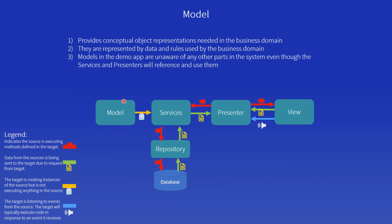The model is not aware of what's going on with a service, a presenter, or a view. It's pretty much isolated. However, there are other parts of the system that do use the model quite a bit. For example, the services layer will make instances of the model and work with it. But the model itself doesn't really know about any of the other parts of the system.